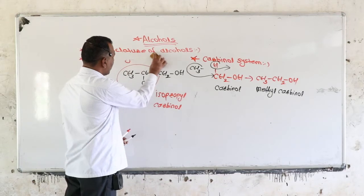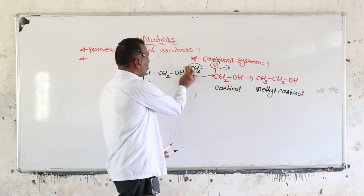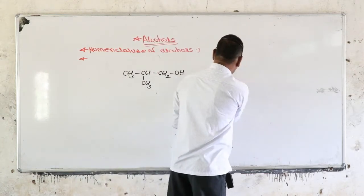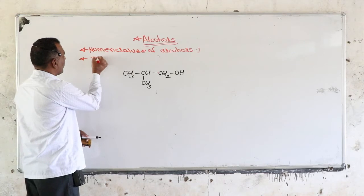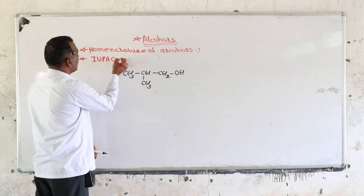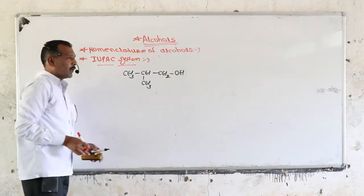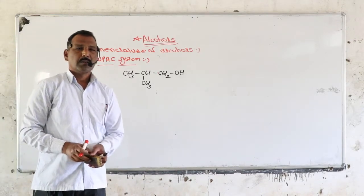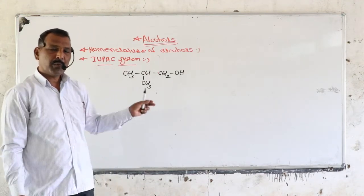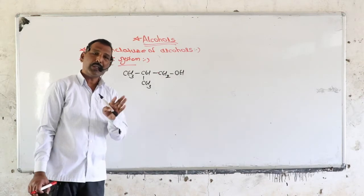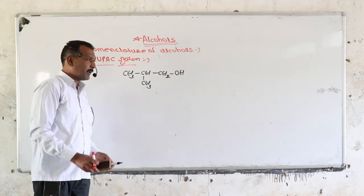Now we will see the next system, that is the IUPAC system — how to write the IUPAC name of an alcohol. By applying the IUPAC rules we can write the name of any alcohol, but we have to follow the rules. Once again I will repeat all the basic rules one by one.